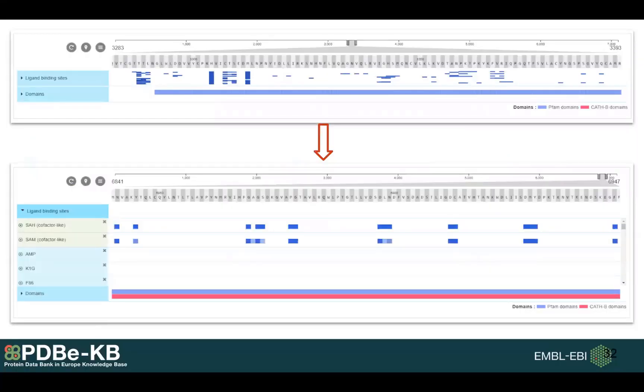Underneath this gallery we have a sequence feature viewer called Protvista. You can use this to actually look at the residues which are interacting with these small molecules. One of the features I really like is that if you collapse the track for the ligand binding sites, then you can see patterns.